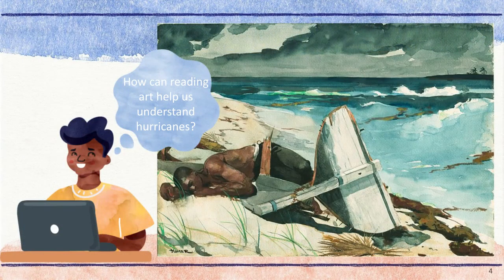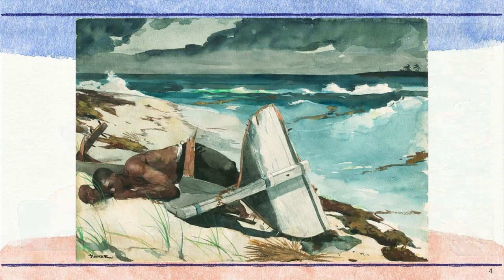Looking closely at art can help us better understand the artist's purpose. For example, let's look at this piece of art called After the Hurricane by Winslow Homer. How can we read this art in order to add to what we already know about hurricanes? We need to look carefully at the details of this piece and think about why the artist may have chosen to include them.